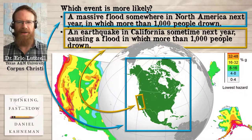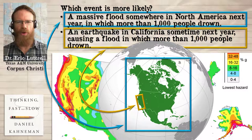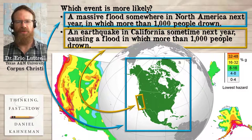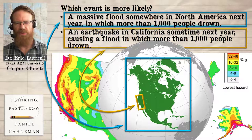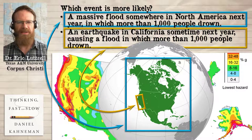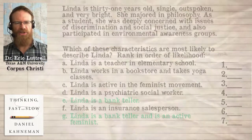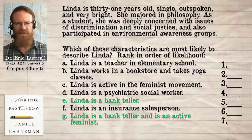We use these patterns to look for coherence. We look to take the new fact, the new idea, and fit it into a previous pattern. This is associative coherence, and it works very quickly and very intuitively, but this association comes at the expense of thinking logically.